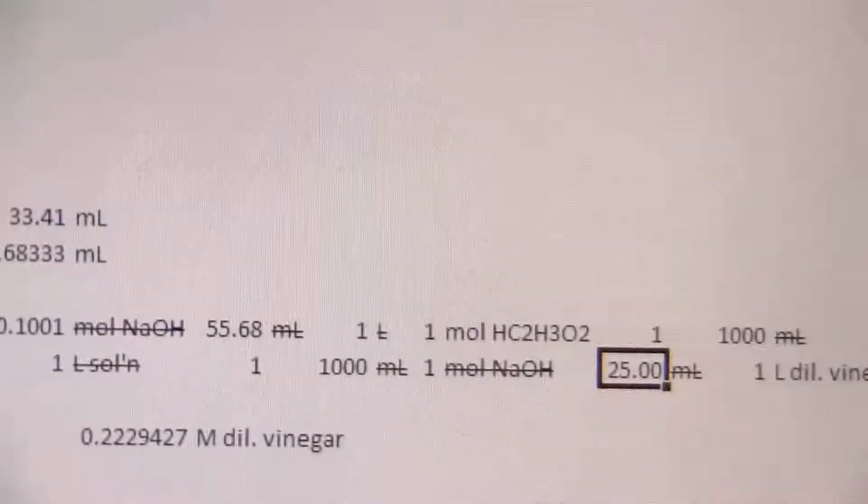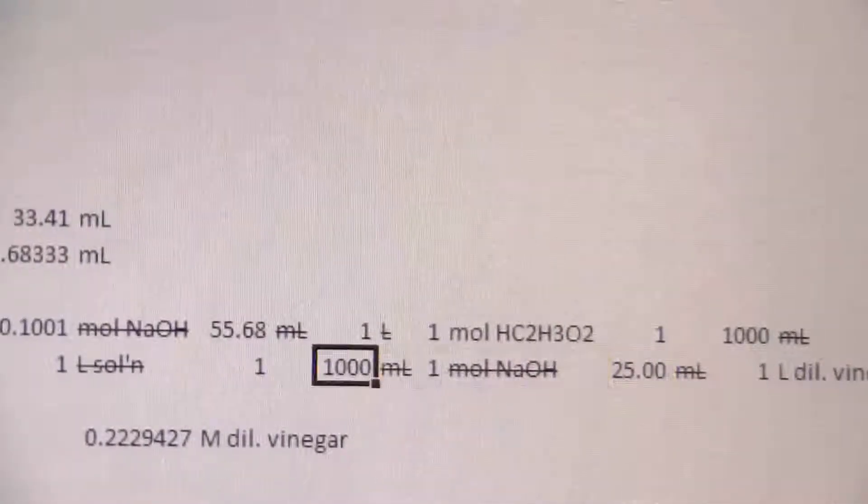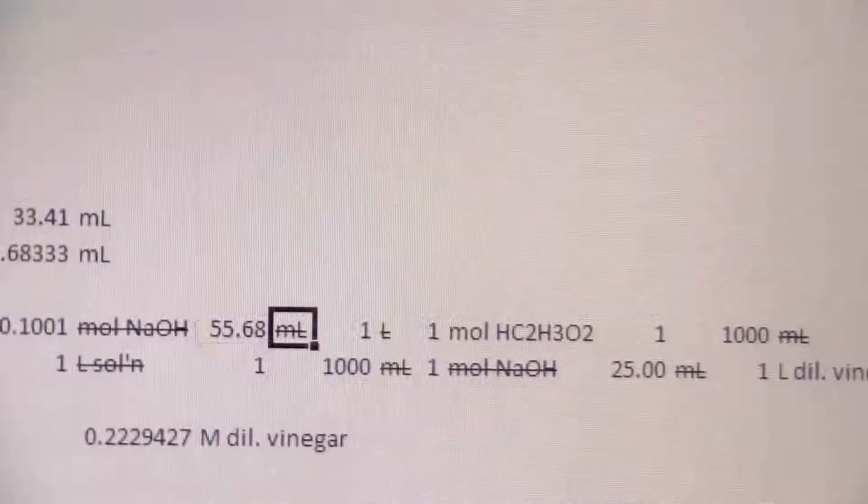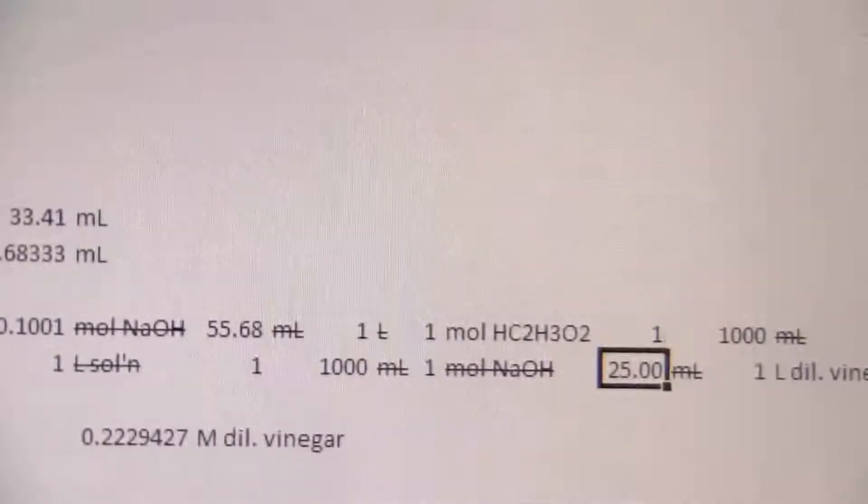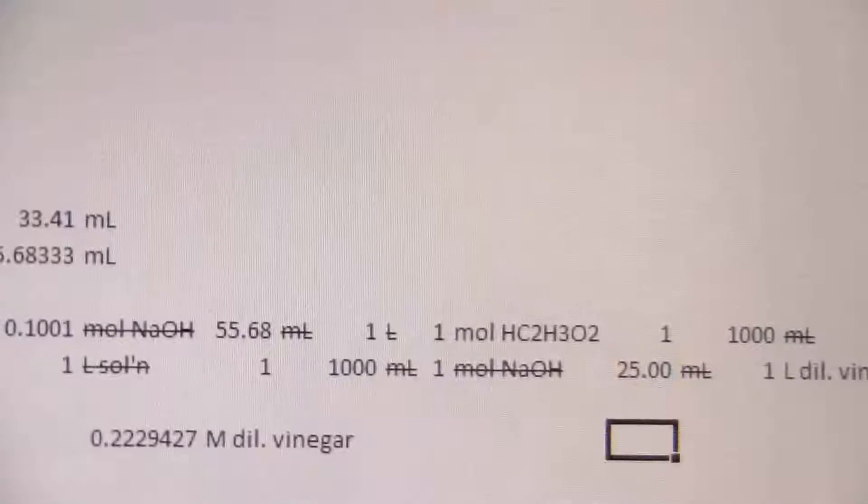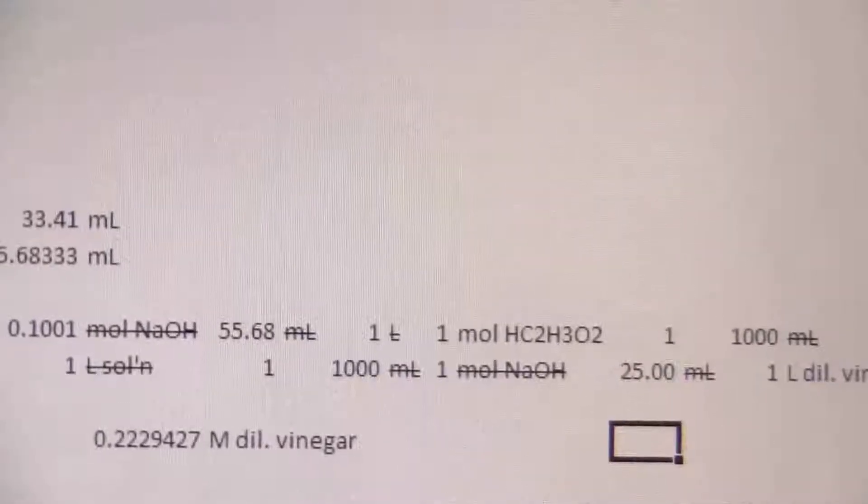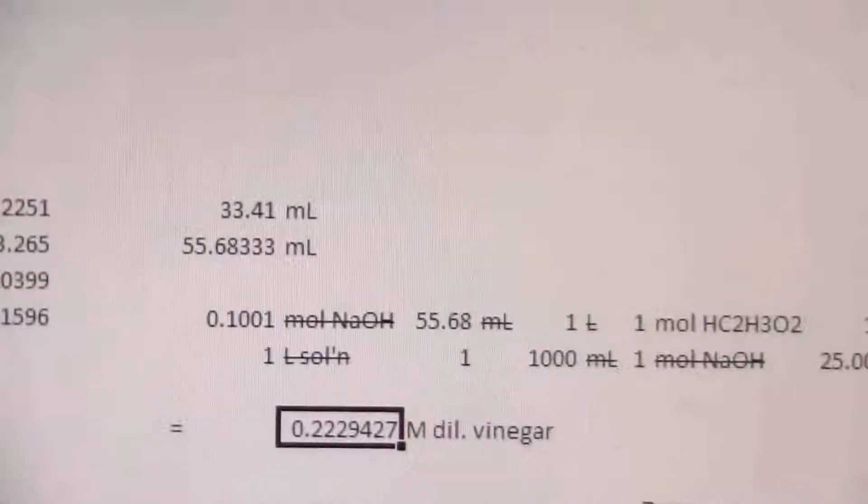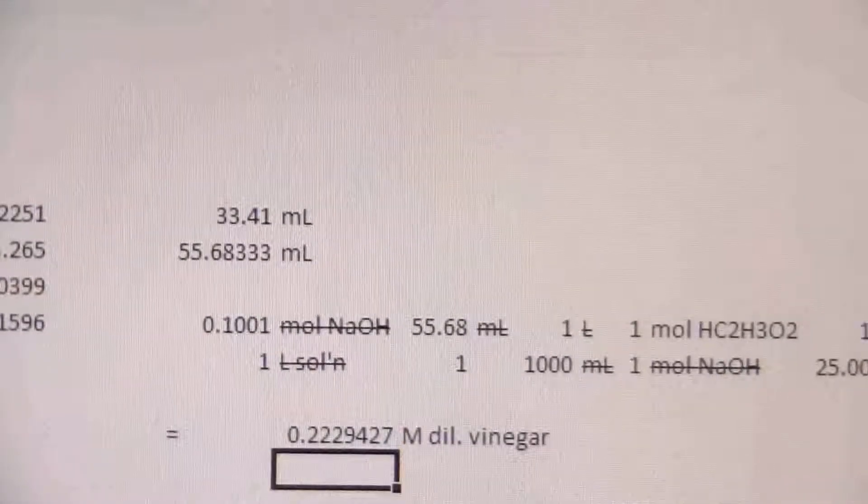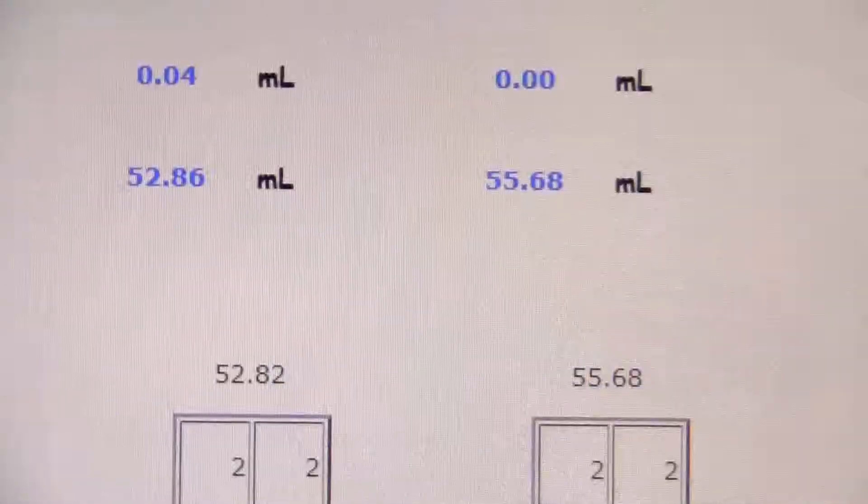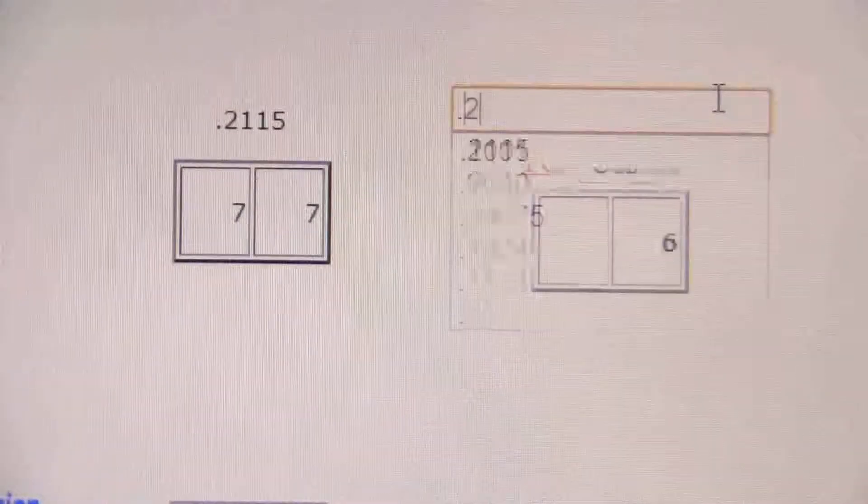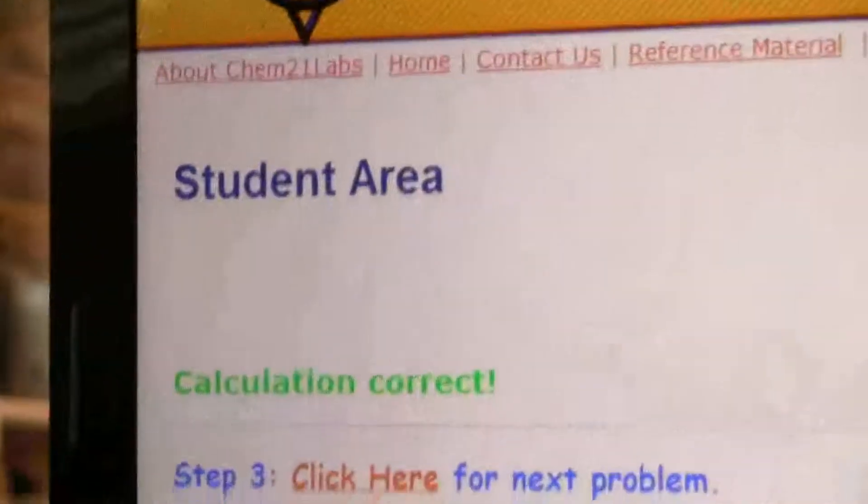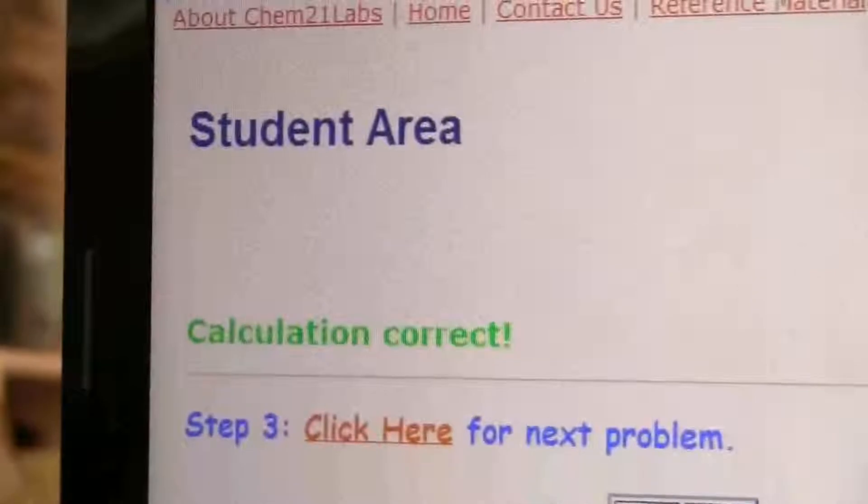Even if you use the 15, since we scaled up this number from our lower number, you're going to go ahead and put 25 there because that's going to be what it's expecting. So in this case, I'll have 0.2229 molar for the diluted solution, and if I put that in here, then it tells me I'm correct.